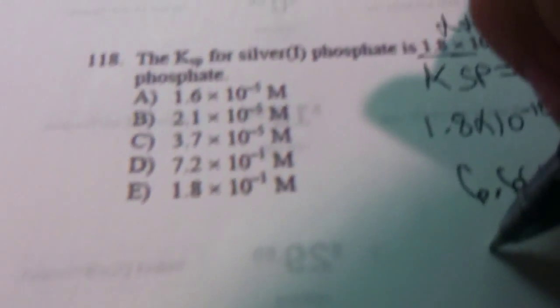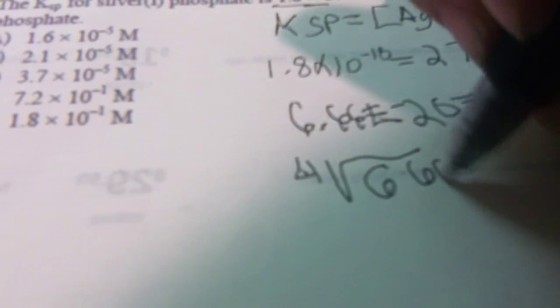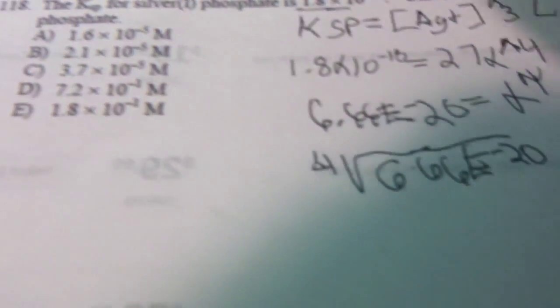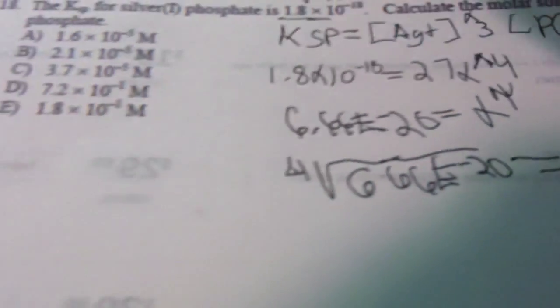And after doing some calculations, the fourth root of 6.66 × 10⁻²⁰, we would eventually come out with...